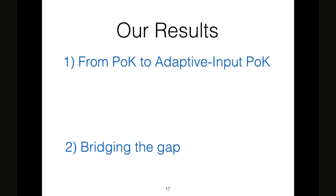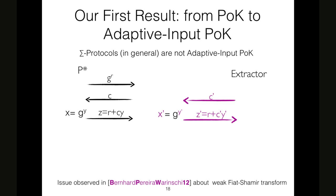What are our results? Our first result is a compiler that takes as input proof of knowledge and outputs an adaptive input proof of knowledge. Why is this so important? Because sigma protocols in general are not adaptive input proof of knowledge. For example, it is easy to see that in the Schnorr protocol, if the prover can choose adaptively the commitment or X to be proved, then the proof of knowledge property is lost. This issue was observed in a work of Bernhard, Pereira, Warinschi about the weak Fiat-Shamir transform. But in that context, they solved this problem in the random oracle model. But what can we do in the standard model?